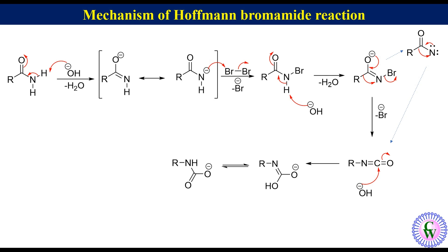The carbamide is very unstable and it eliminates carbon dioxide to produce the anion of a primary amine. There is a water molecule in the medium, so the anion of the amine gets protonated by water to produce hydroxide and the amine.